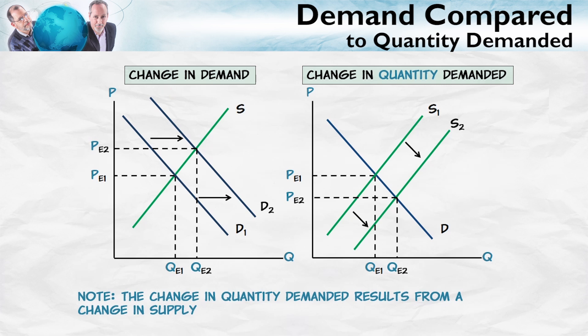In the first case, on the left, we have an increase in demand. The entire demand curve shifts out. In the second case, on the right, we have an increase in the quantity demanded. That is, a movement along a fixed demand curve caused by a shift, in this case, in the supply curve.